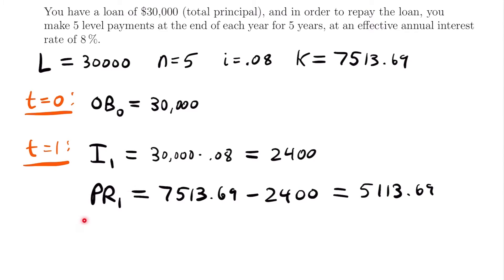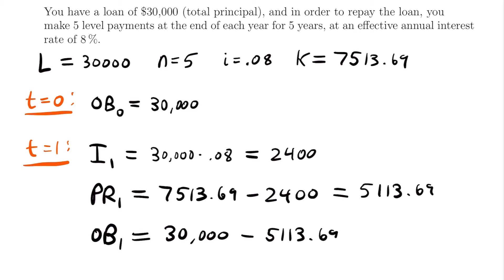The principal paid at time one equals our payment minus the interest: $7,513.69 minus $2,400 equals $5,113.69. The $2,400 of interest is paid off, and $5,113.69 goes toward reducing the outstanding balance. So the outstanding balance at time one equals the previous outstanding balance of $30,000 minus the principal of $5,113.69, which equals $24,886.31.